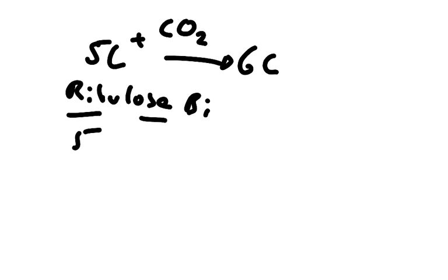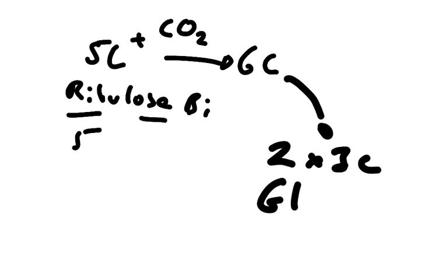And this six-carbon compound produces two three-carbon compounds with a phosphate on each. Because there was a six-carbon with two phosphates, it's split into two three-carbons with two phosphates. So this is three-carbon glycerate phosphate.